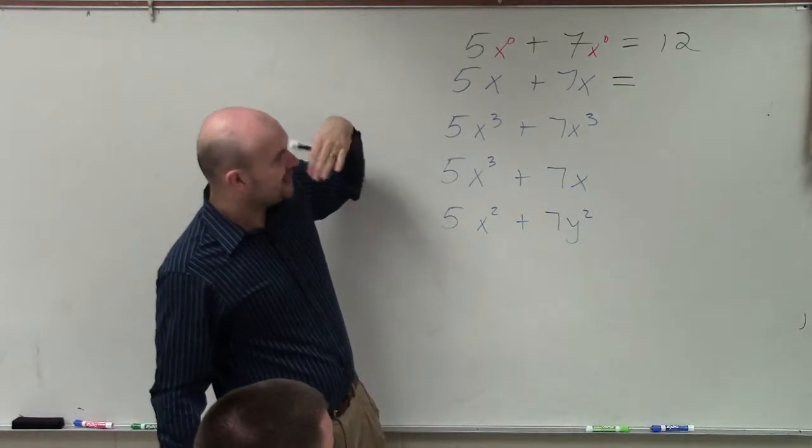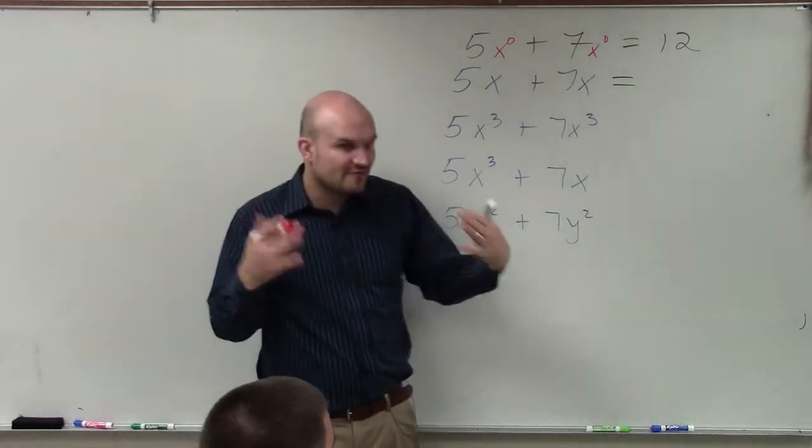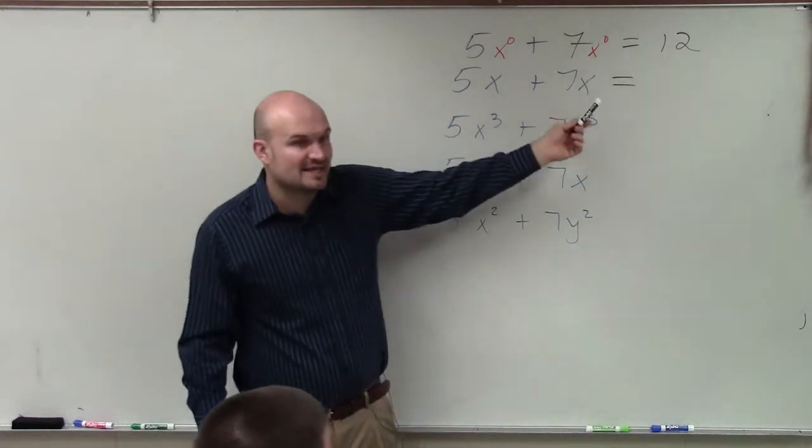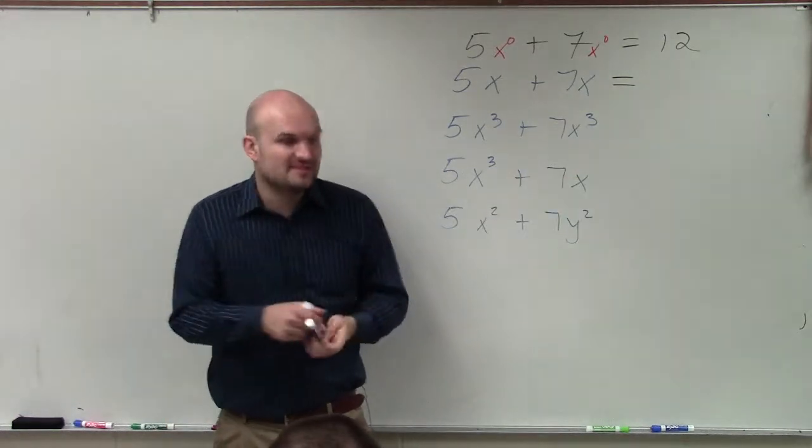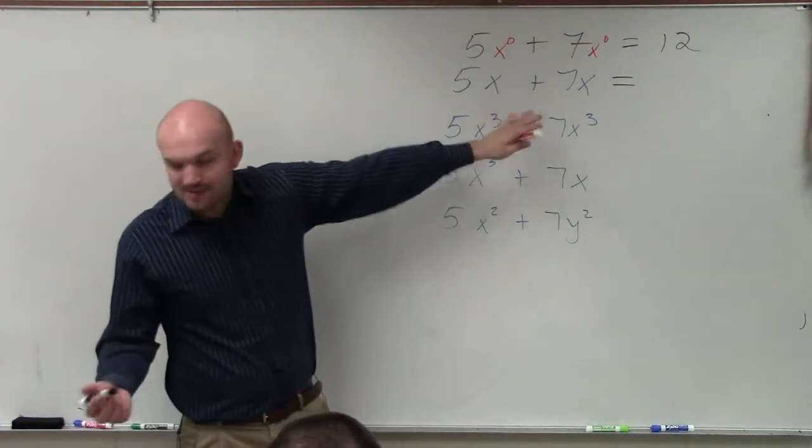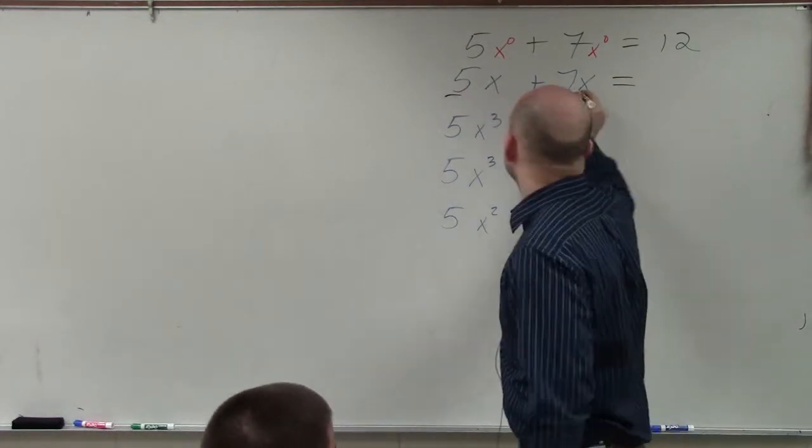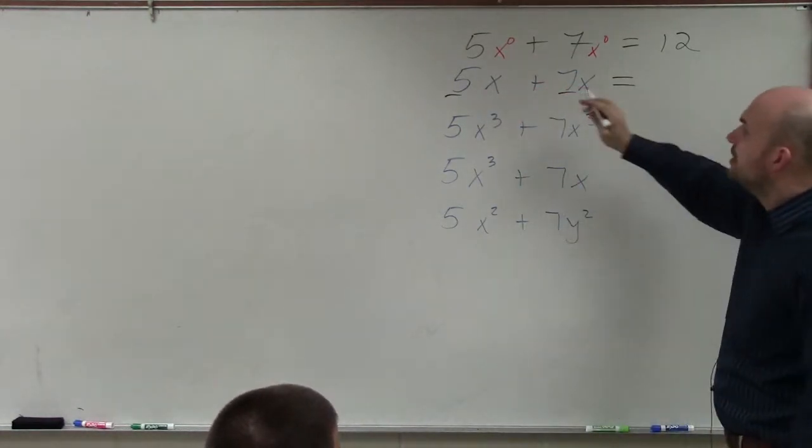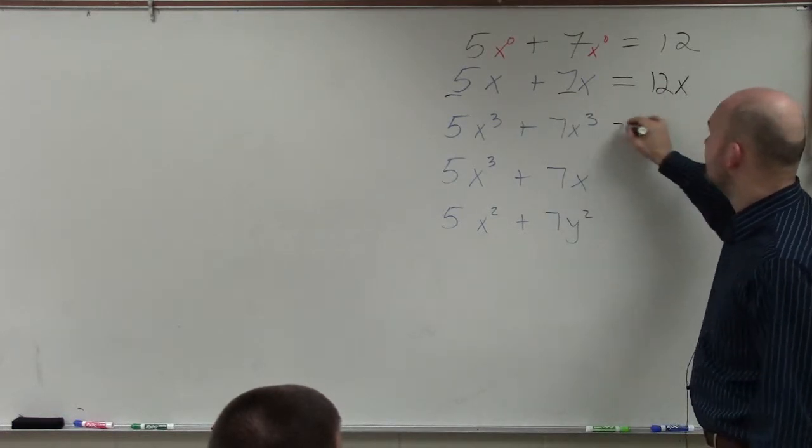So for instance, another example is 5x plus 7x. Again, look at what the variables are. Your variables are x and x. The factors of x is just x and 1, right? So since they have the same variable factors, we can combine them. And when we combine them, you are just going to add the coefficients of each monomial, of each term, which is going to be 5 and 7, which would be 12x.